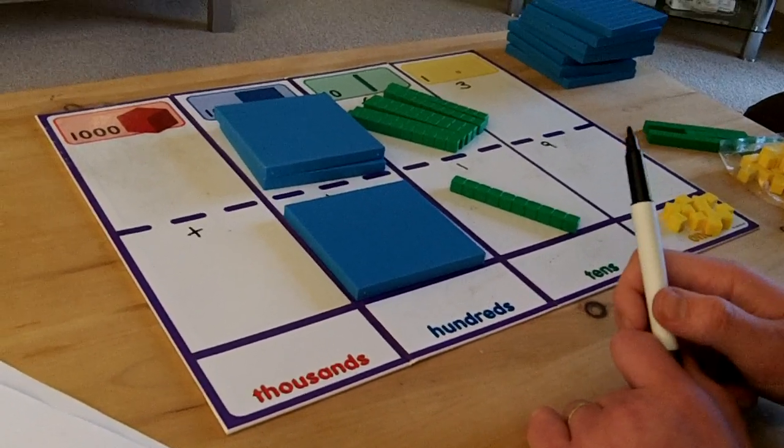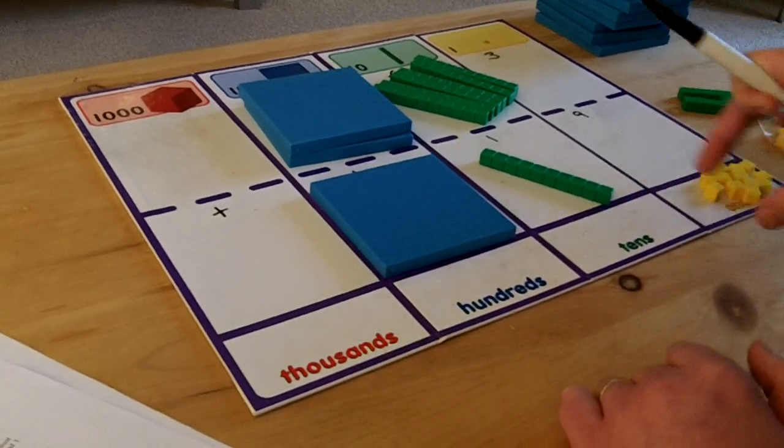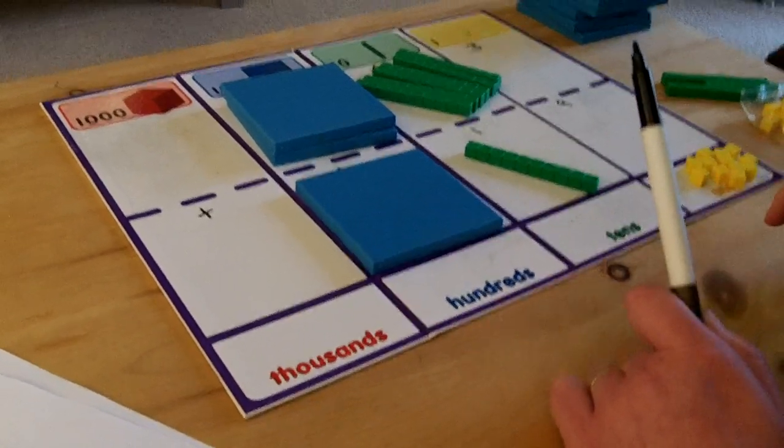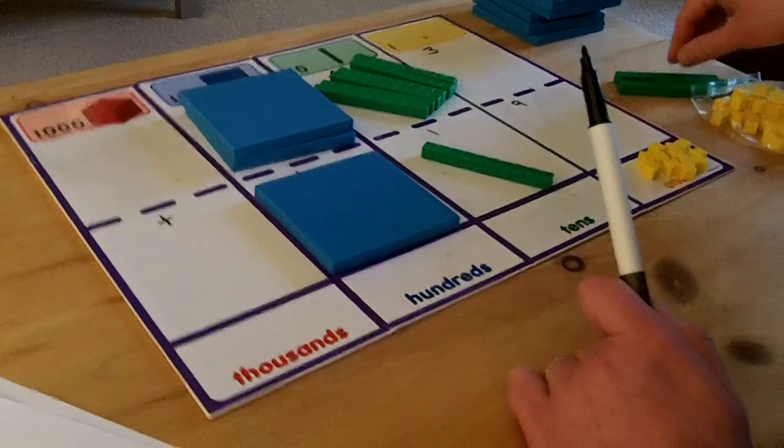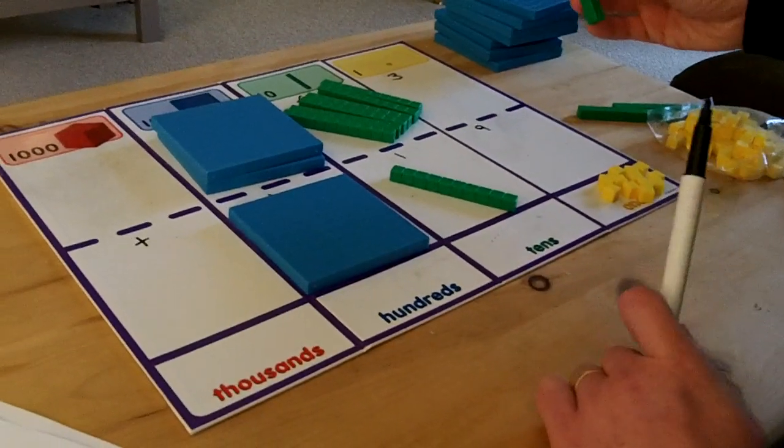As 12 is a 2 digit number I can't just have that in the ones column. I must exchange 10 of these cubes for a row of 10 cubes.